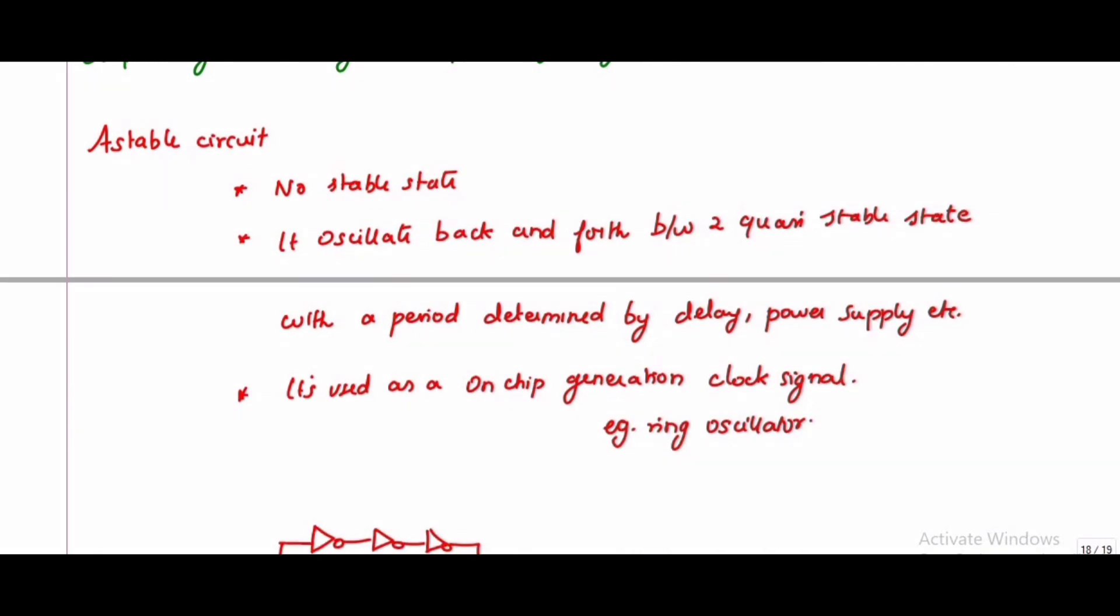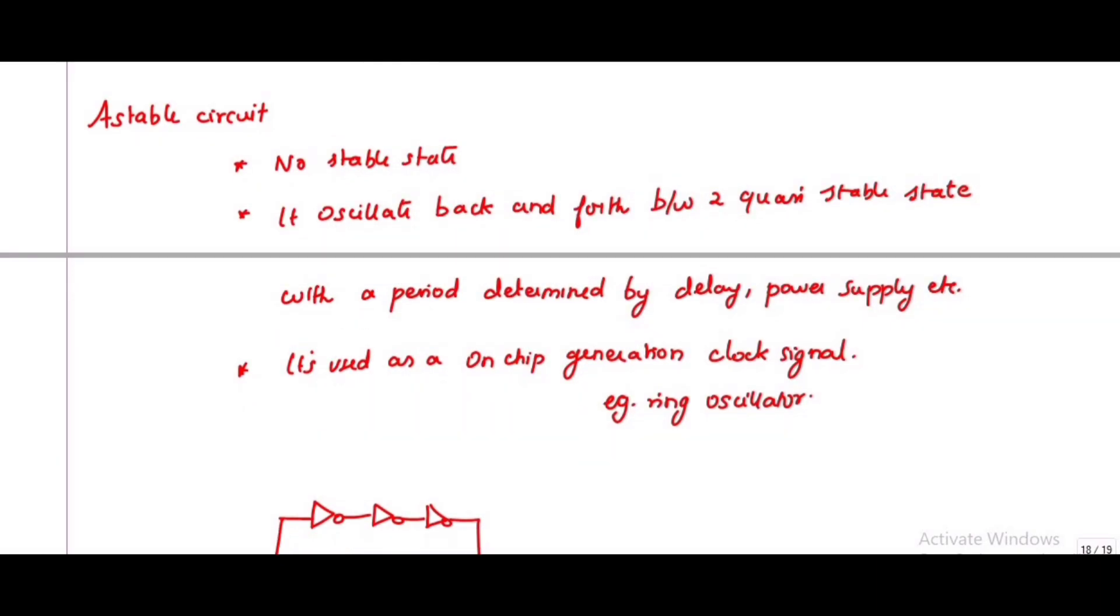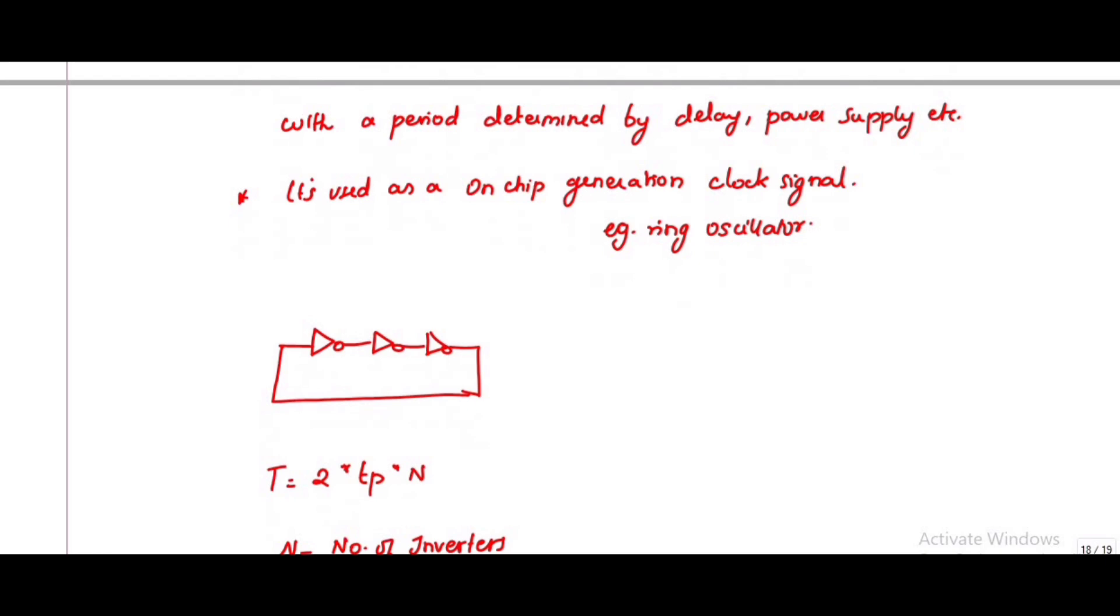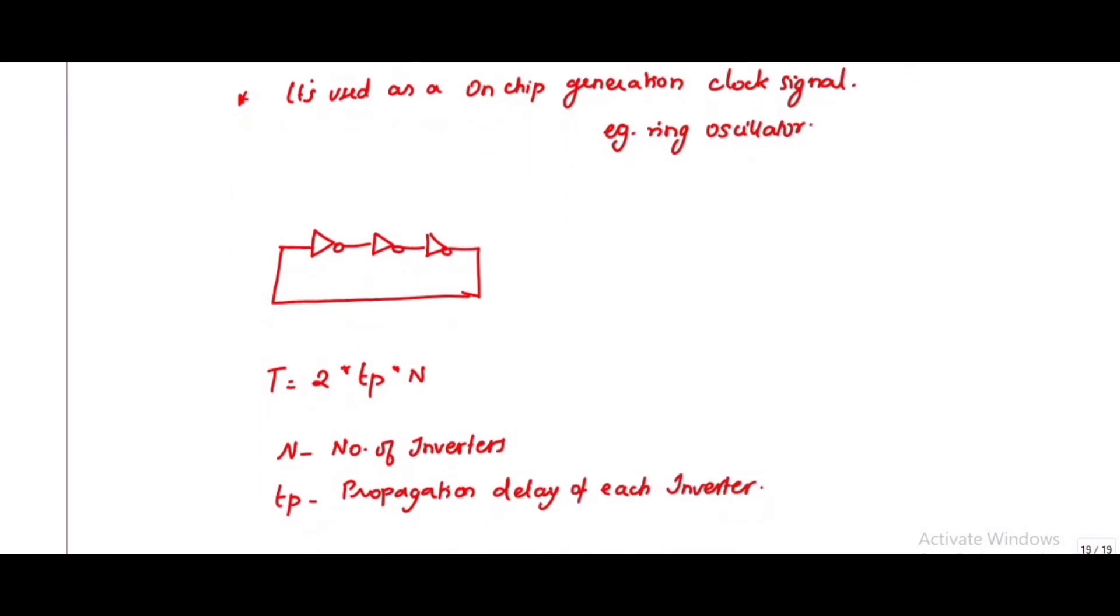Next we will discuss astable circuits. Astable means it has no stable state. It consists of two quasi-stable states, so it will oscillate back and forth between these two quasi states with a period determined by the delay circuit. This circuit is used for clock signal generation. An example for this circuit is a ring oscillator.